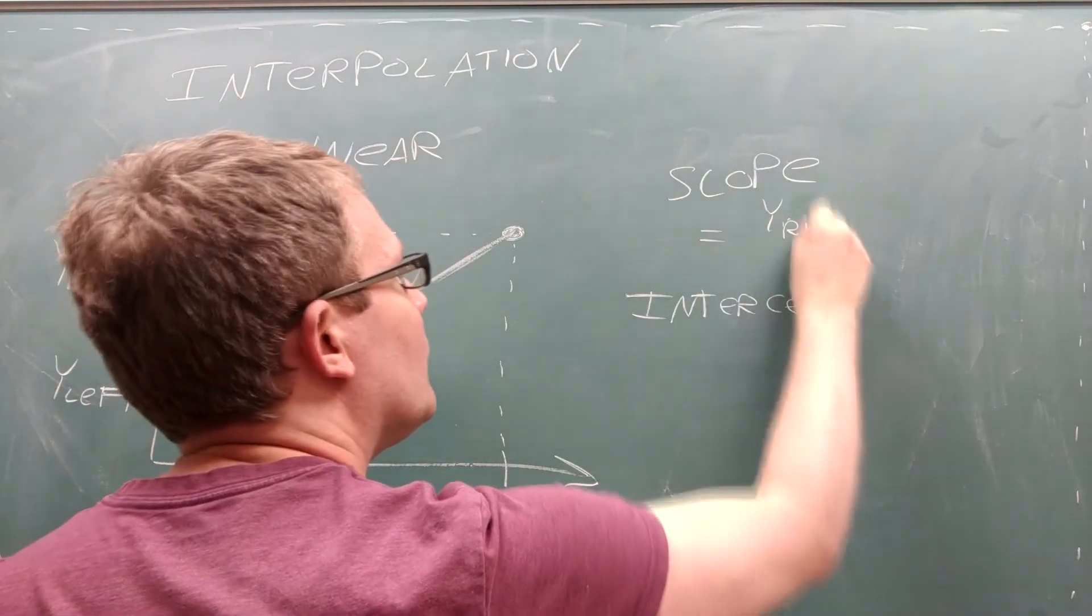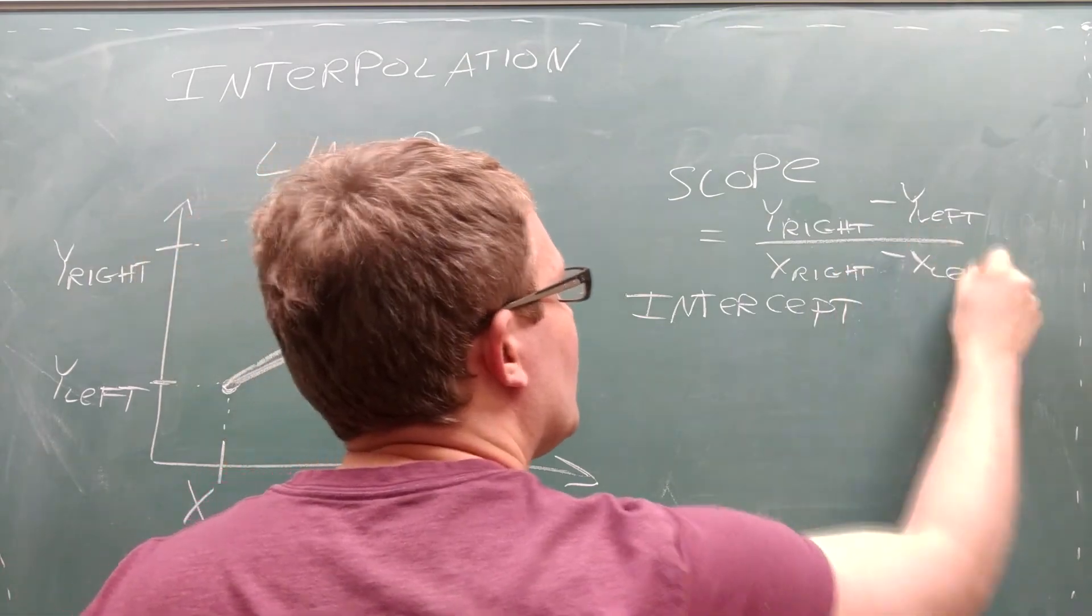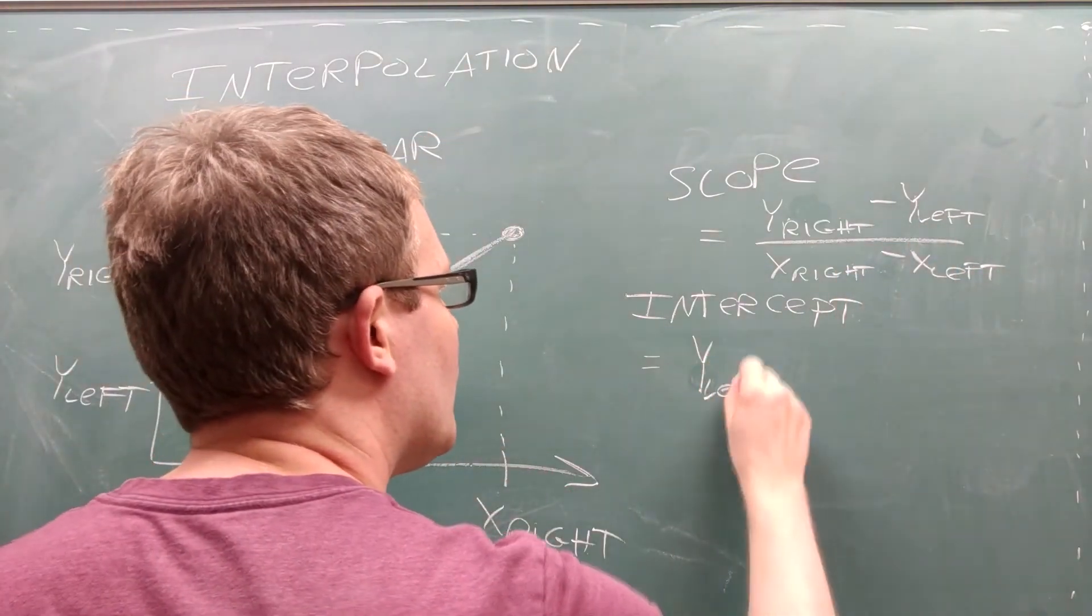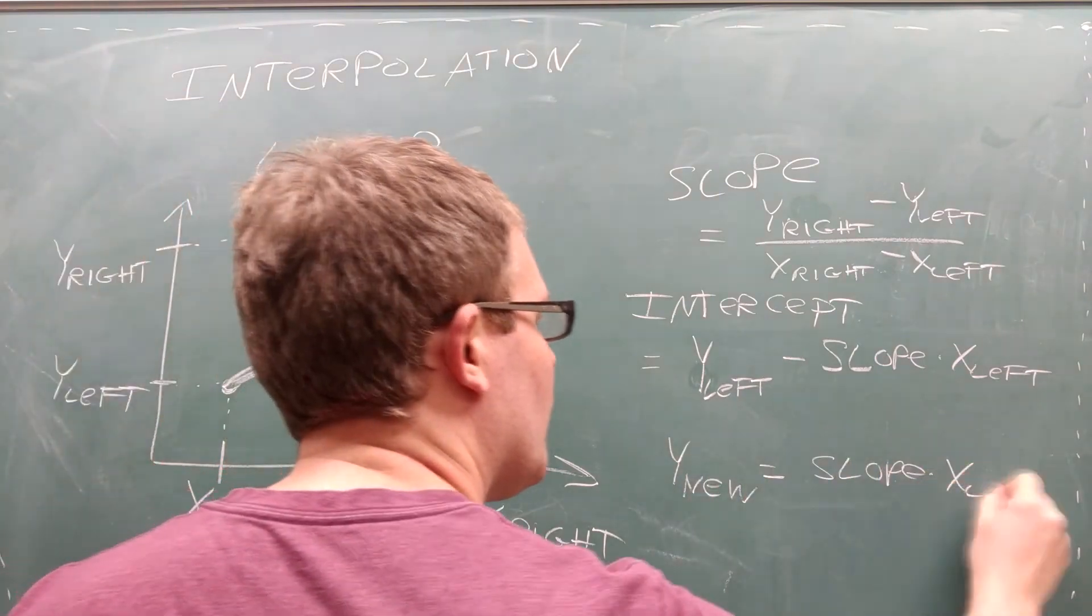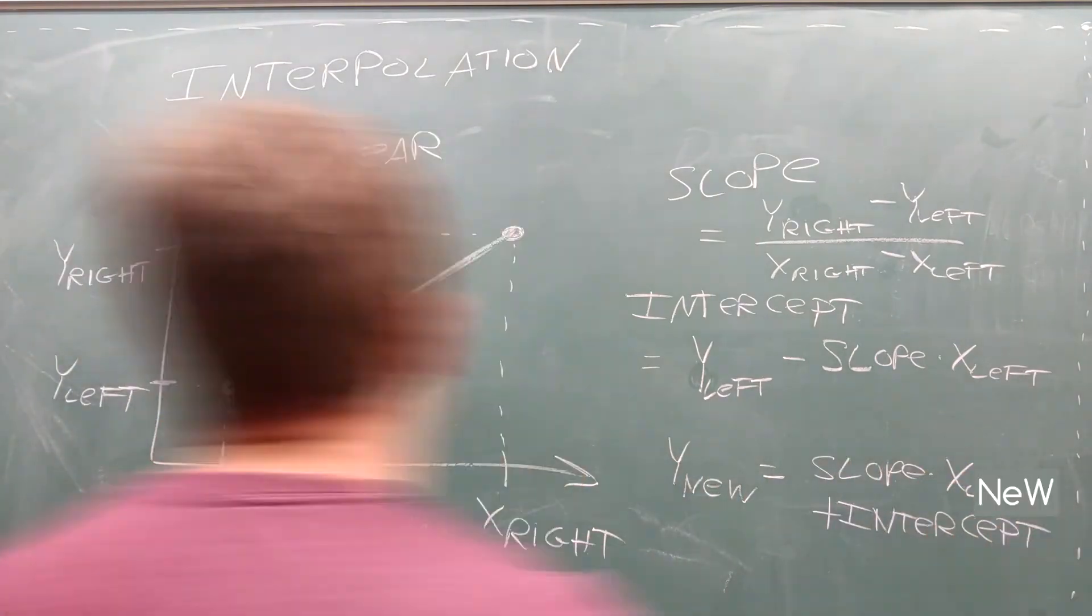Remember, lines have a slope and an intercept which you can determine from these two values. Once you have the slope and intercept, you use the standard equation for a line, good old y equals mx plus b, to determine the independent variable at your desired location.